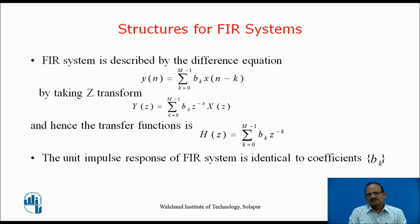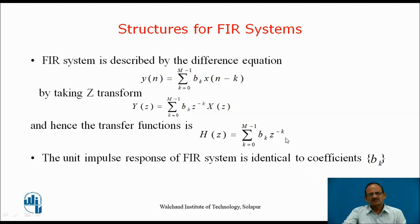Now let us consider the structures for realization of an FIR system. The FIR system is described by the difference equation y(n) = sum from k=0 to M-1 of b_k * x(n-k). Taking the Z-transform, we write Y(z) = sum from k=0 to M-1 of b_k * z^(-k) * X(z). Therefore, the transfer function H(z) = Y(z)/X(z) = sum from k=0 to M-1 of b_k * z^(-k). The unit impulse response of the FIR system is identical to the coefficients b_k.